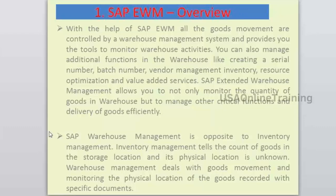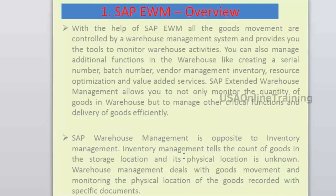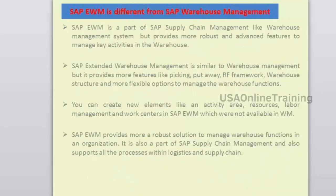EWM is different from inventory management. Inventory management tells you the count of goods in the storage location but its physical location is unknown. Warehouse management deals with goods movement and monitoring the physical location of goods, recorded to specific documents. Inventory management tells only the count; the physical address is known only when stock is managed with WM through specific documents.